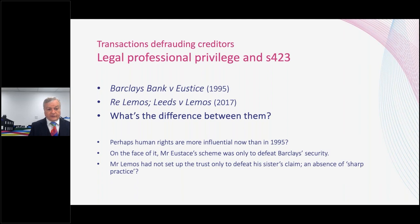So what's the difference between Barclays Bank and Eustace and the Lemos case? It might be that human rights are now more influential than they were in 1995. It might also be that Mr Eustace's case seemed transparently set up for the sole purpose of defeating Barclays' security — that element of sharp practice was present. In the Lemos case, that sharp practice was absent; the reasons for setting up the trust were complicated and a very long time ago.